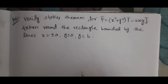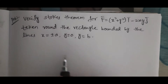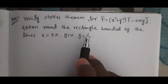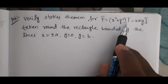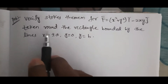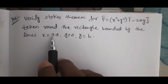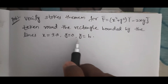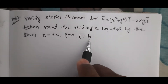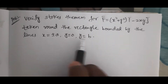Hi viewers, welcome to Rajesh Lekaloo. Today our topic is Stokes theorem problem — a very important problem. Verify Stokes theorem for F̄ = (x² + y²)ī − 2xy j̄, taken around the rectangle bounded by the lines x = ±a, y = 0, y = b.